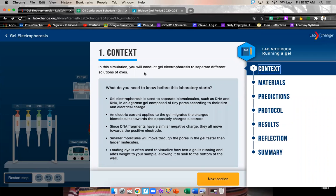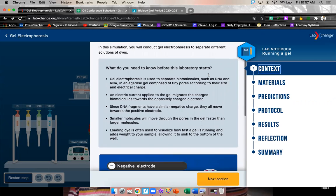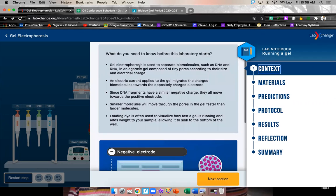In this simulation, you will conduct gel electrophoresis to separate different solutions of dyes. What do you need to know before this laboratory starts? Gel electrophoresis is used to separate biomolecules such as DNA and RNA in an agros gel composed of tiny pores according to the size and electrical charge.